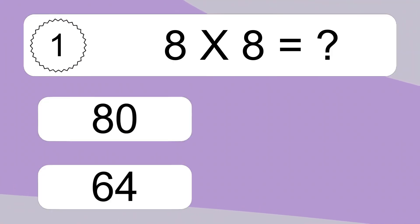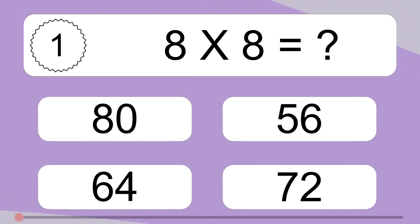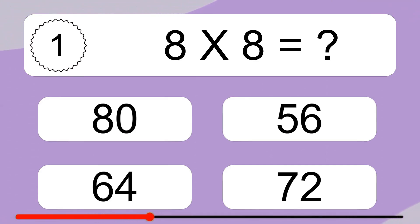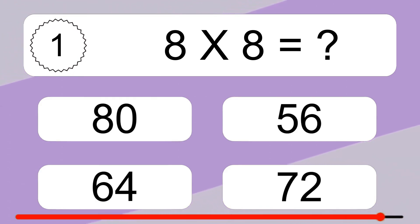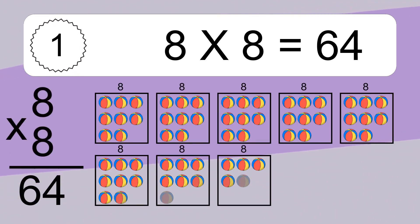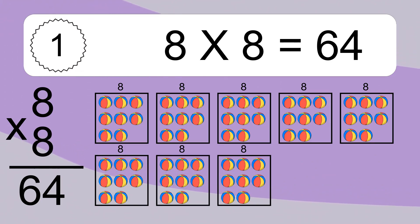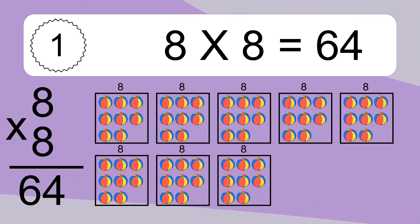8 times 8 equals what? 8 times 8 equals 64. We have 8 boxes, and each box has 8 colorful balls inside. If you count all the balls in all the boxes together, you will have 8 times 8 balls. This equals 64 balls.